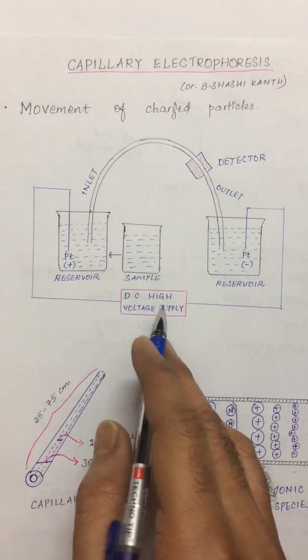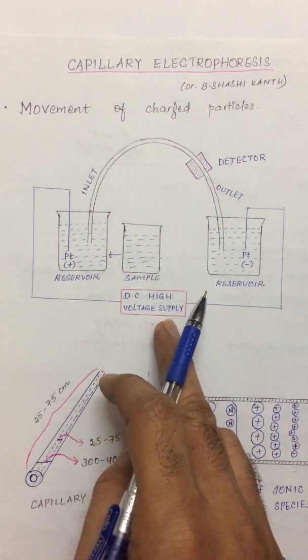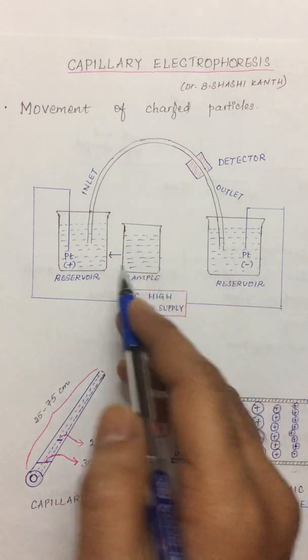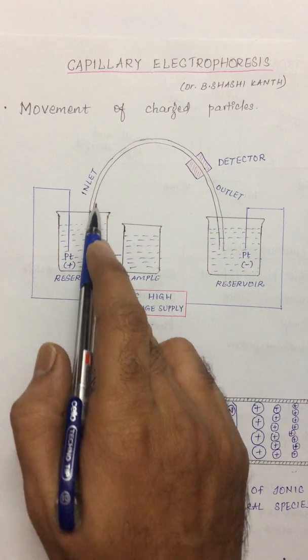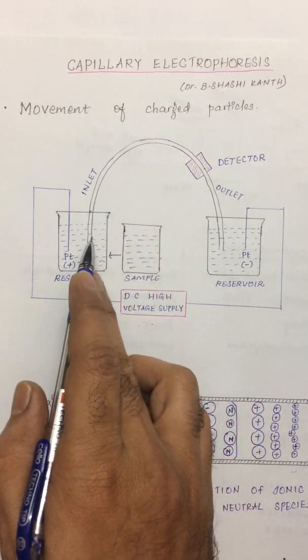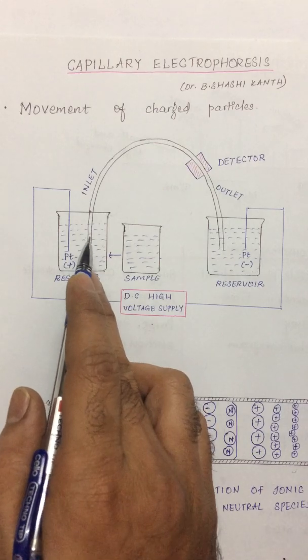Separation is carried out by applying a high potential of about 10 to 30 kilovolts to a very narrow fused silica capillary which is filled with a mobile phase. This mobile phase is a buffer.